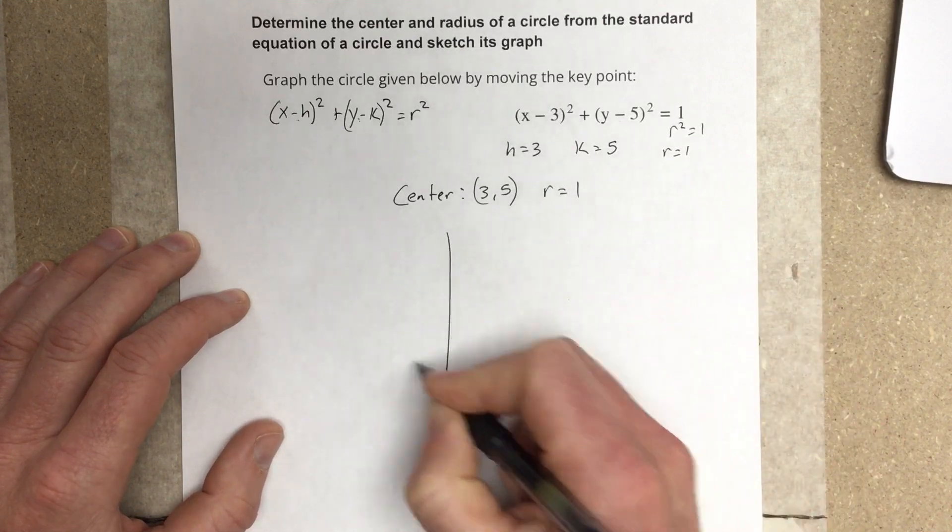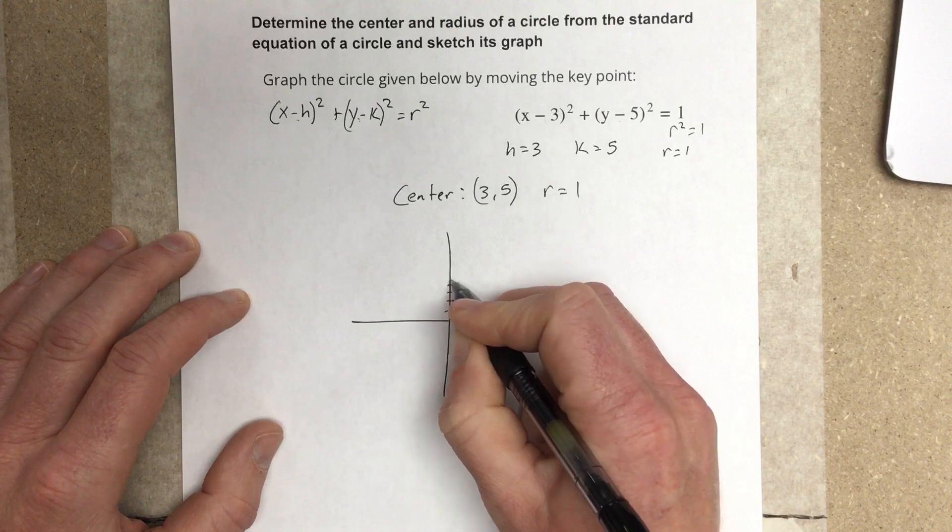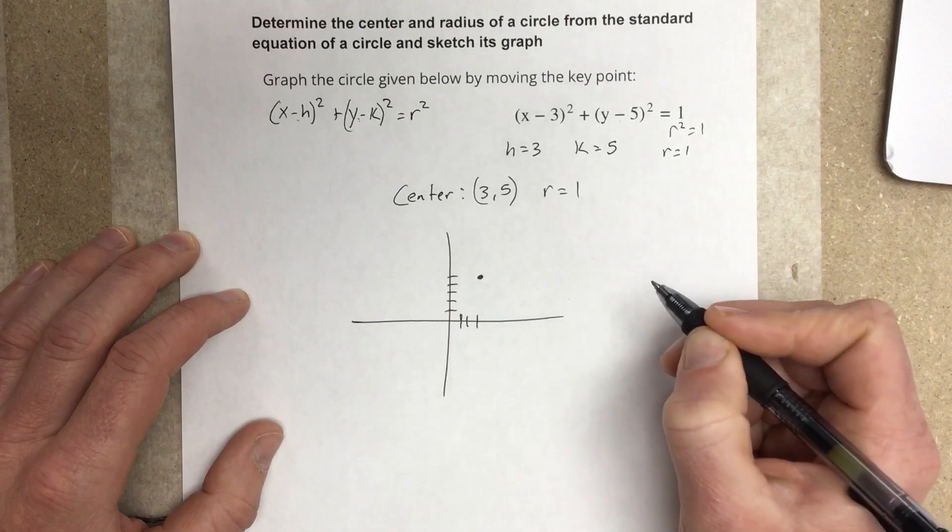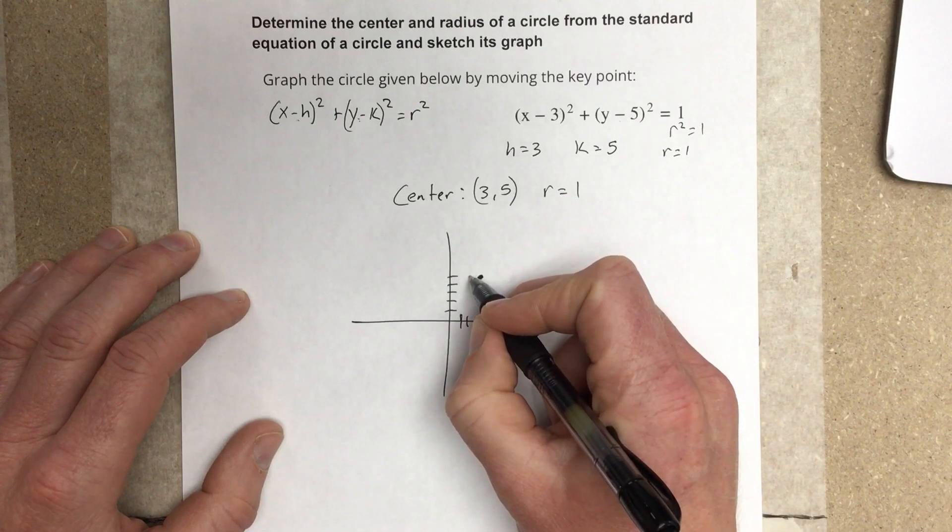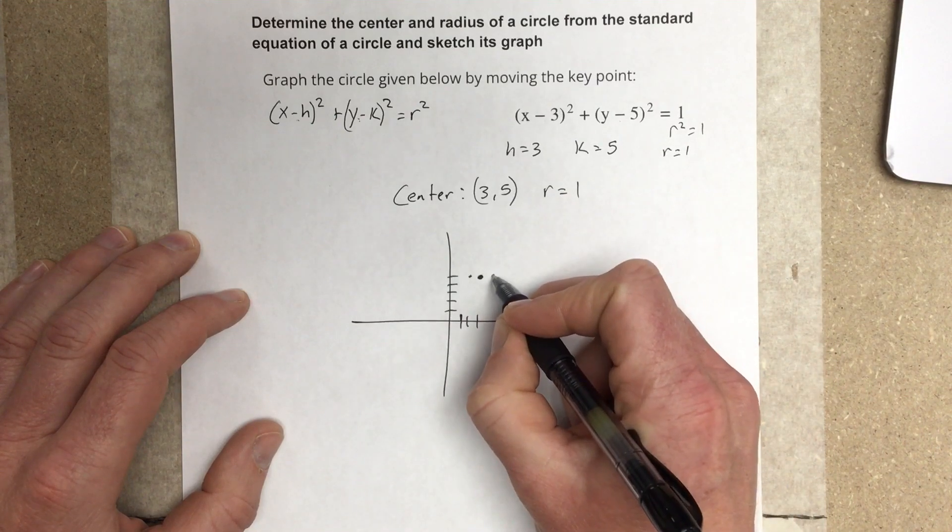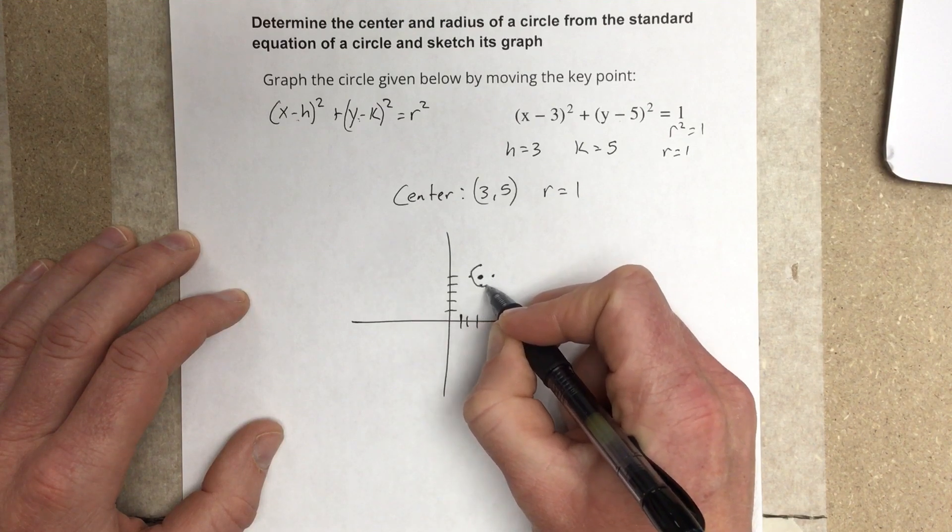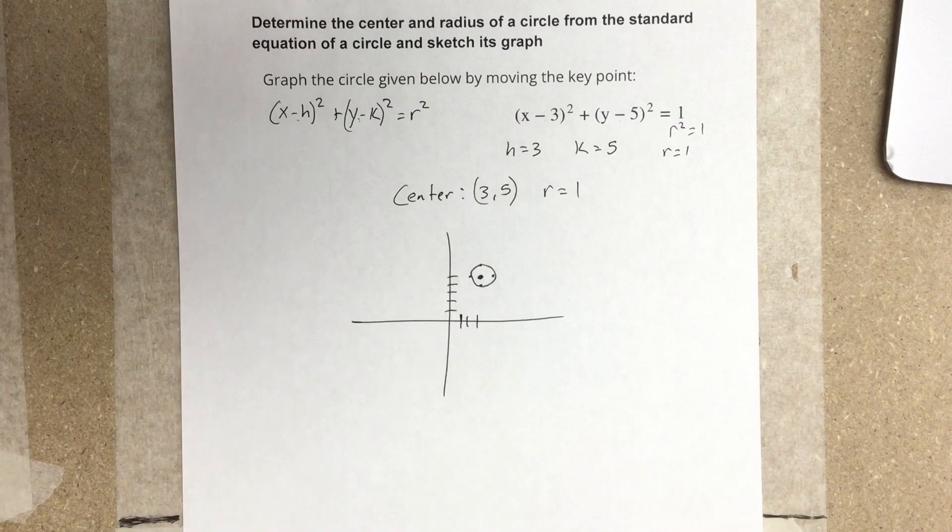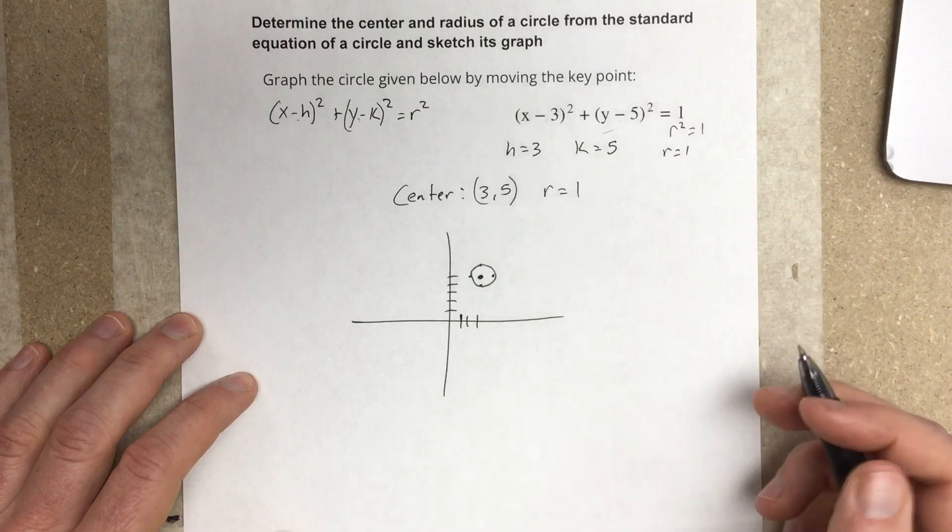Let's sketch it. 1, 2, 3... 1, 2, 3, 4, 5. Mark the center. Radius is 1, so I'm going to go 1 in each direction. Let's make some dots. And there's my circle graphed from the equation in standard form.